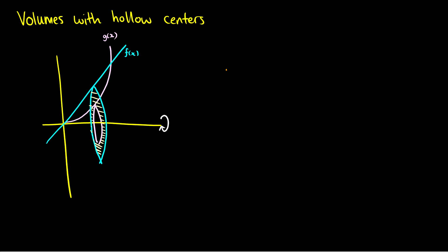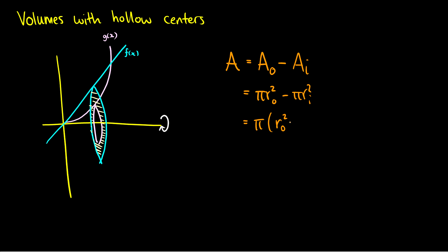If we want the area of all these individual slices, it's just going to be the area outer (A_O) minus the area inner (A_I). So this will be π·r_out² minus π·r_in², which we can factor as π times the outer radius squared minus the inner radius squared.